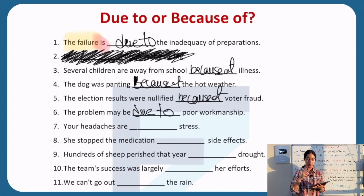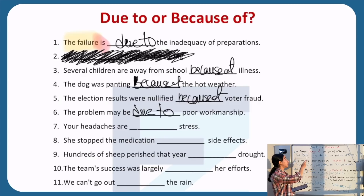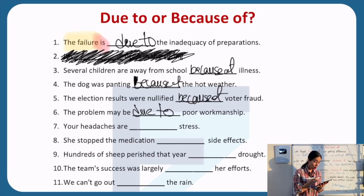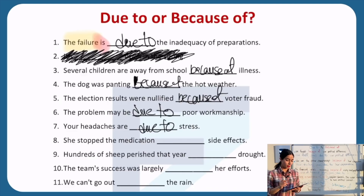Another example: 'Your headaches are ___ stress.' Pattern: noun phrase 'your headaches' + to-be verb 'are' → 'due to.' Your headaches are due to stress. Done! Her victory was due to her experience. Our fight was due to our political differences. The rise of financial crisis was due to risky mortgage practices.